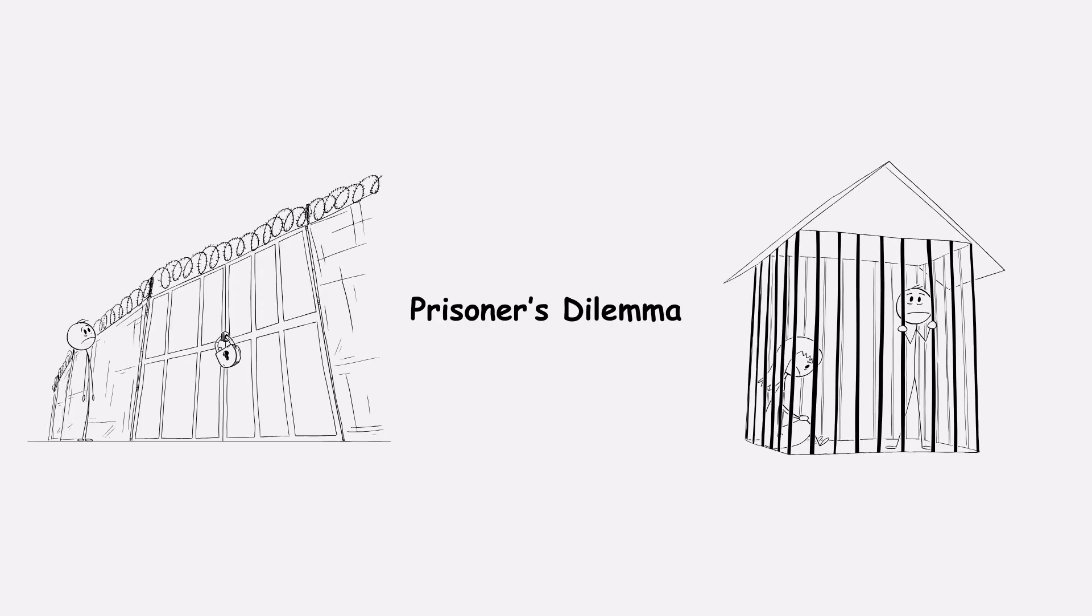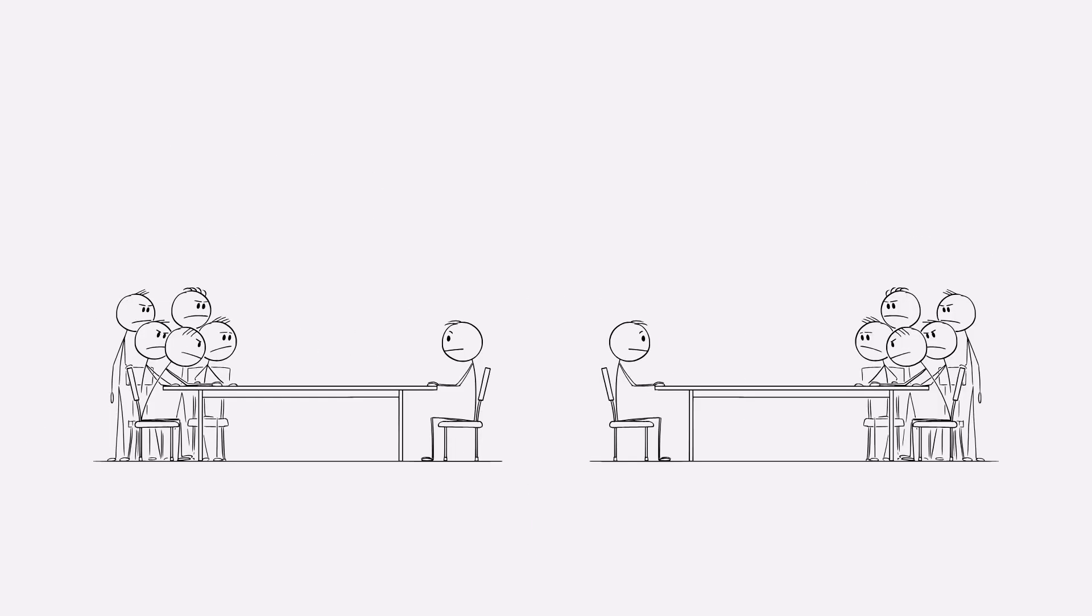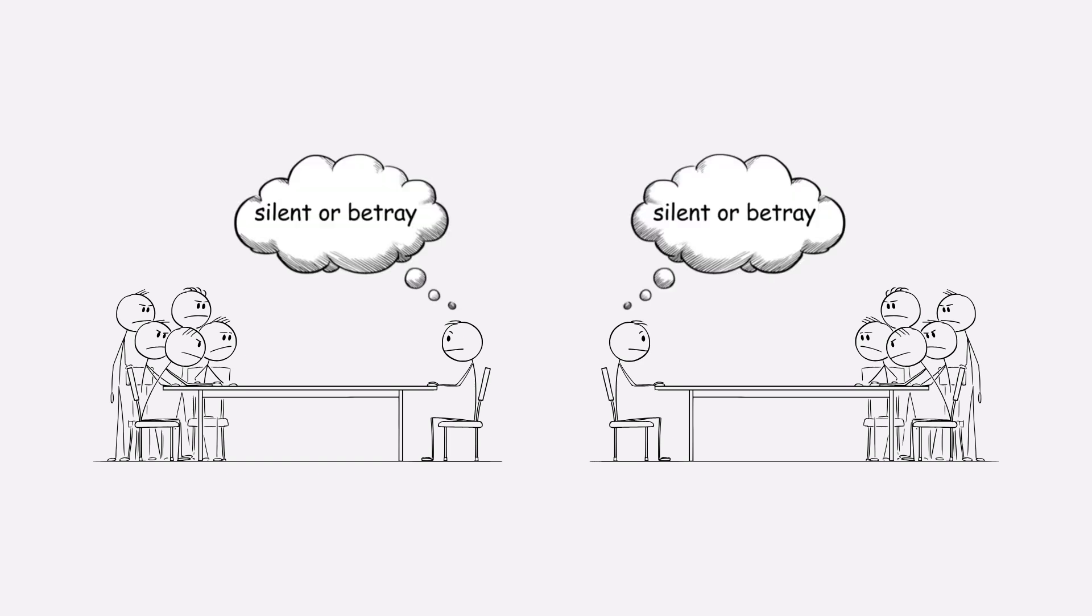The most famous example is the prisoner's dilemma. Two suspects are questioned separately. Each has two choices: stay silent or betray the other. If both stay silent, both get to go free.